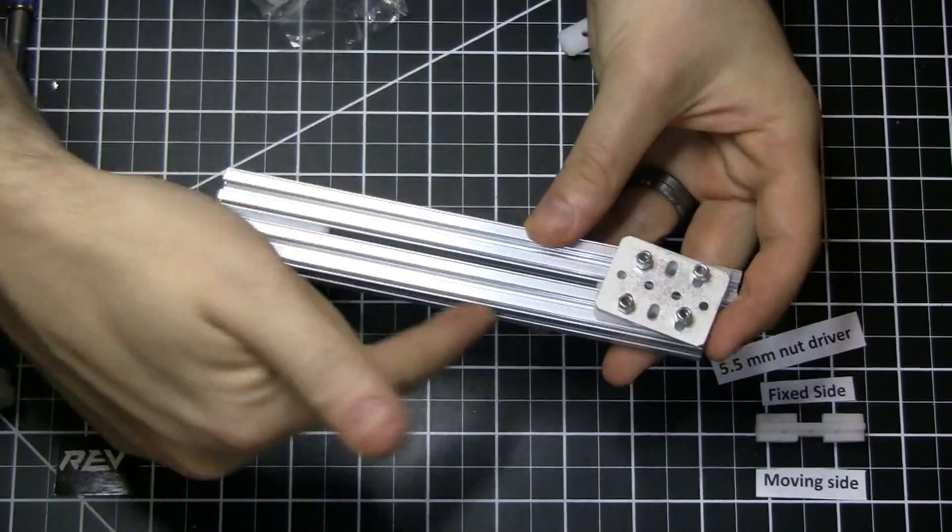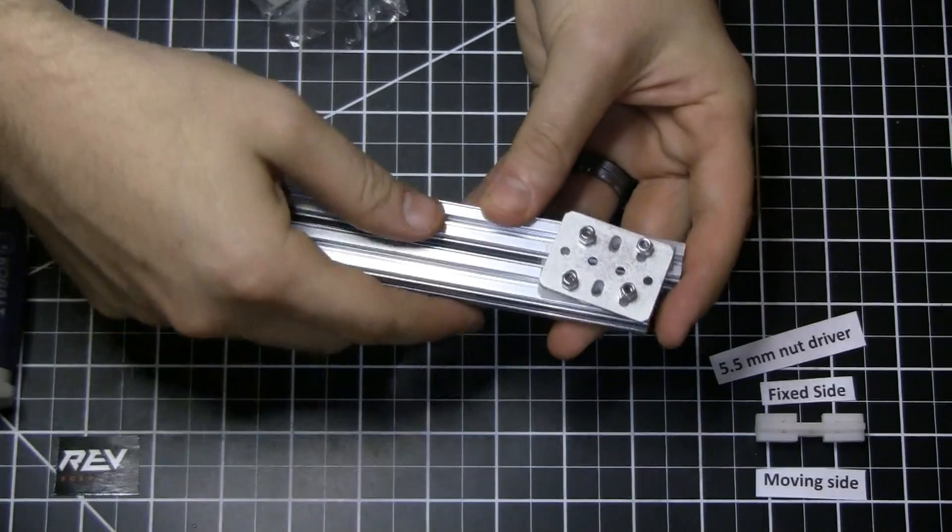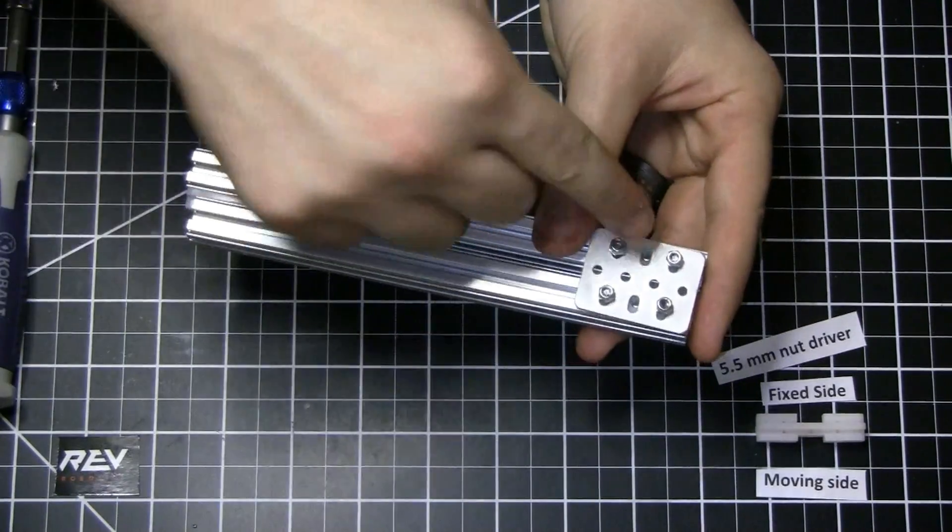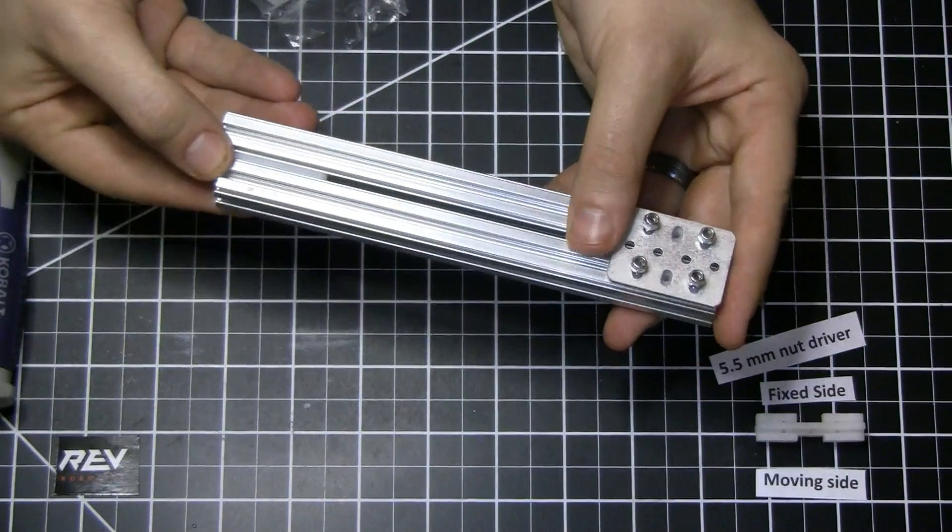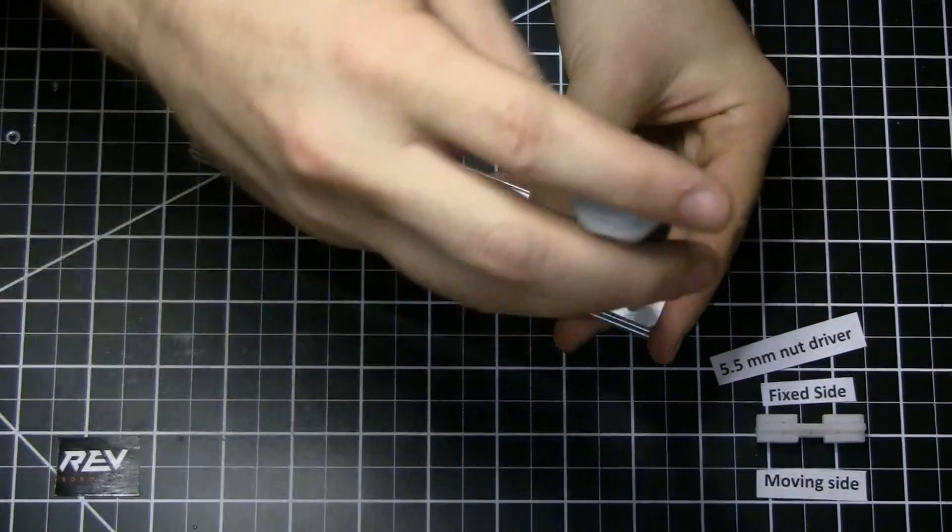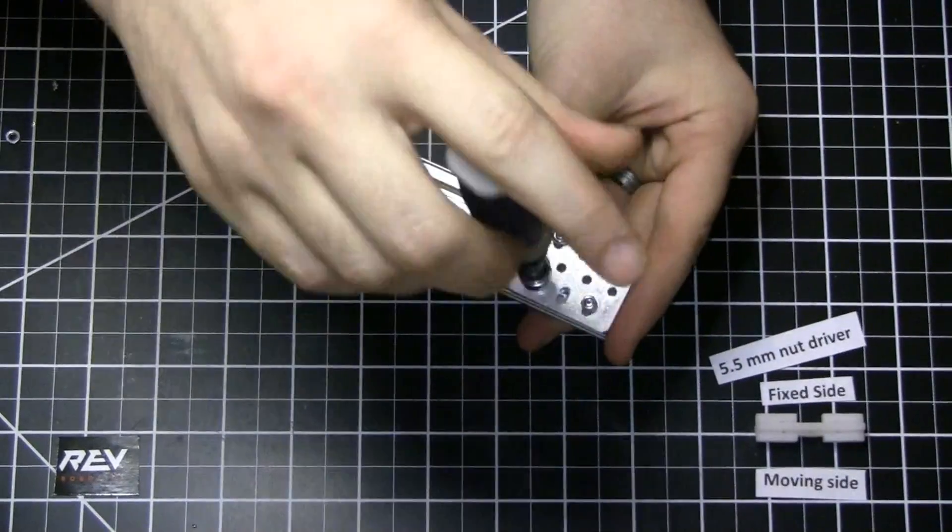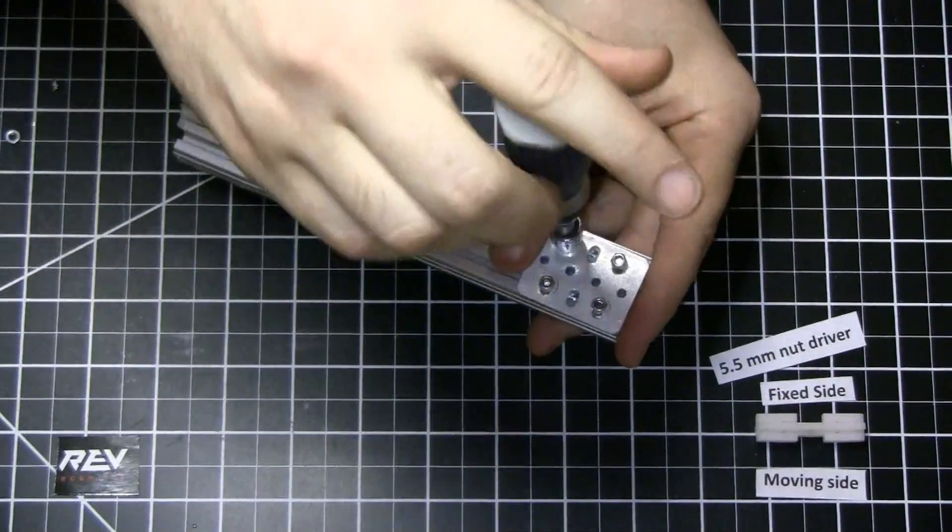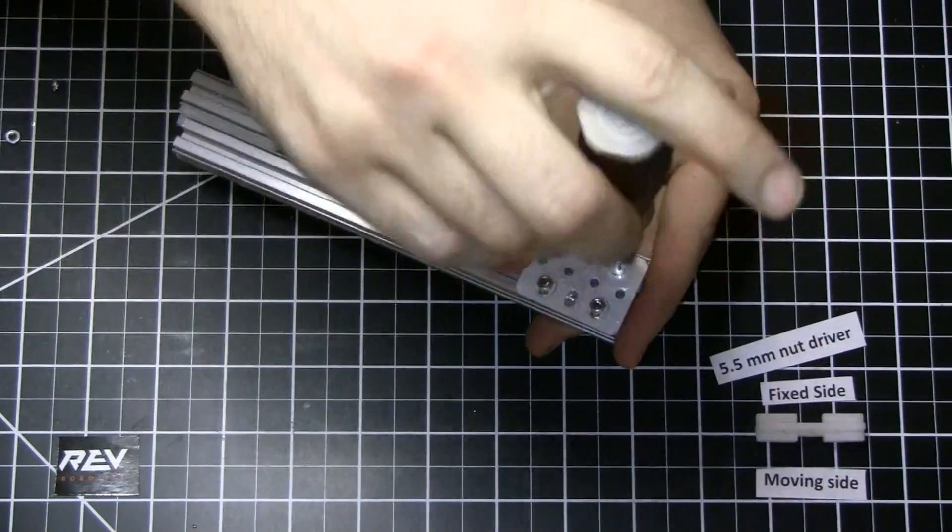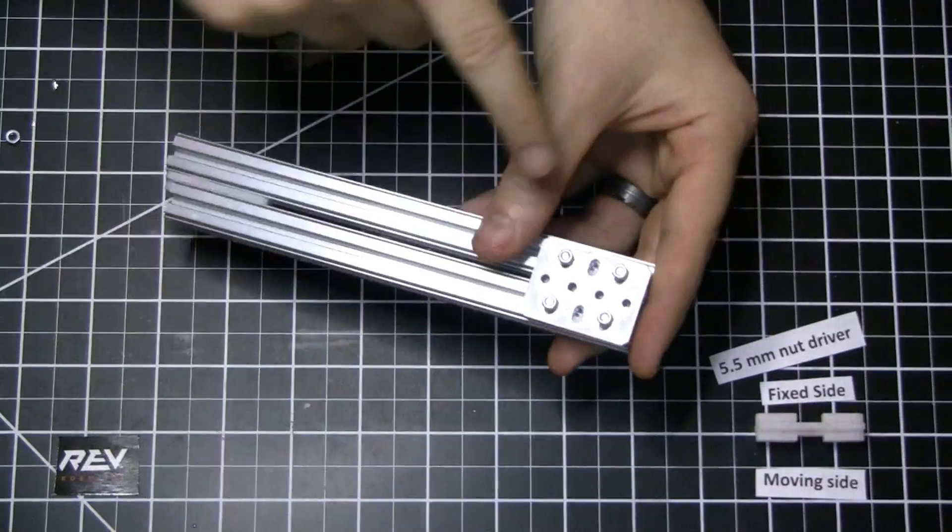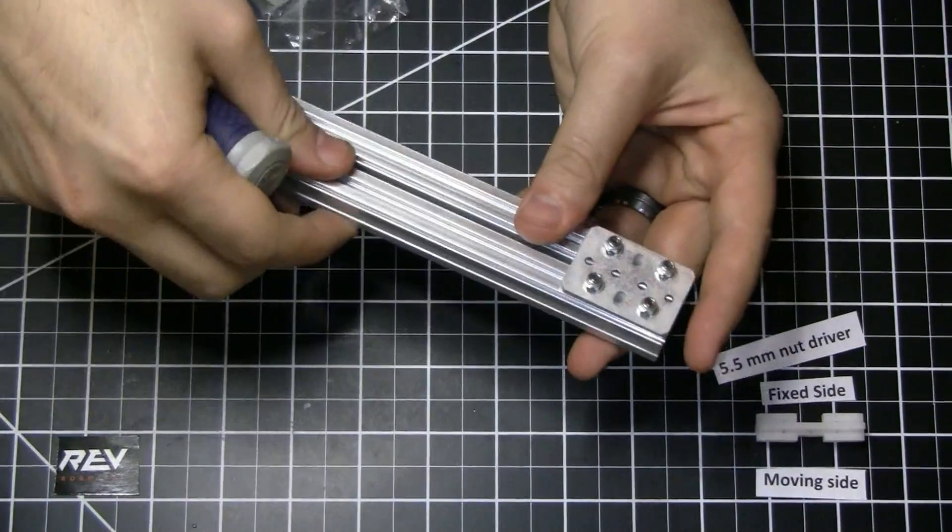So now we know that this side right here is the one that we want fixed and we want this side to be the one that slides. So we'll take the nut driver and we will tighten them all so they're slightly snug but not too snug. The ones on the outside will leave a lot looser than the ones on the other side.